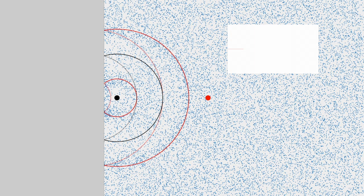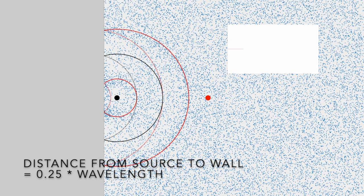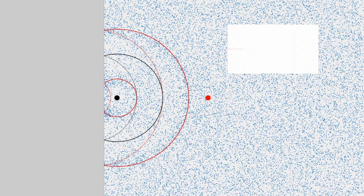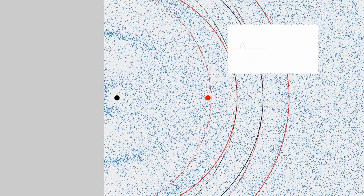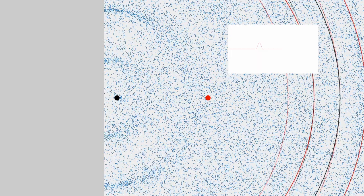What happens if we change the distance but keep the frequency the same? Moving the sound source to one quarter of a wavelength from the wall — half the previous distance — the high pressure wave reflects back much sooner. It arrives back at the source just as we're trying to emit a low pressure wave. The high pressure reflection and the low pressure emission cancel each other out, and at the listening position there's no sound — those air molecules aren't moving at all.